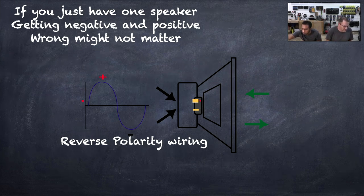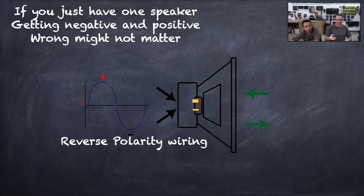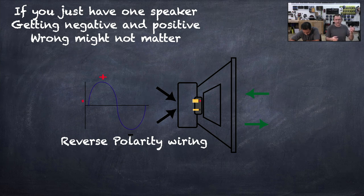If you just have one speaker, getting a negative and a positive wrong might not matter because it's just one speaker. There's nothing for it to play against. Your ears won't know. It's just going to move. And how that works is if you cross the stream. So you take your negative, hook it up to positive, positive hook up to negative. It happens a lot because it could be a wire that has a square positive and a round negative, or they just labeled the wires wrong, or when they were printing them, they decided to flip the positive and negatives.